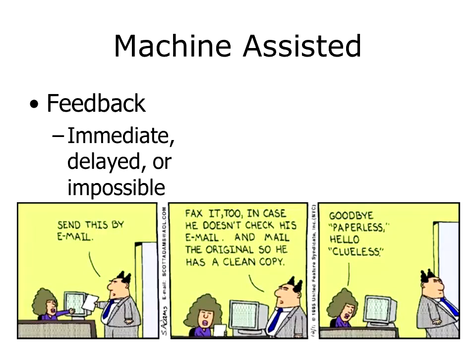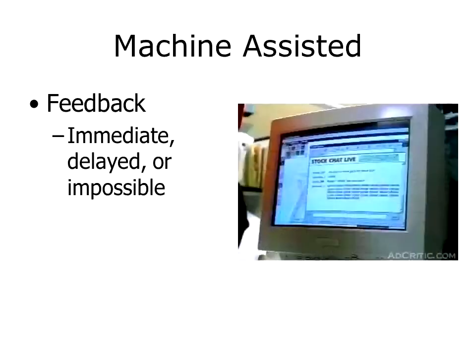Machine assisted communication feedback can be either immediate — we could be having a phone conversation and I could get angry and hang up — it could be delayed, where you send me an email and it might be days before I respond, or it might be impossible.